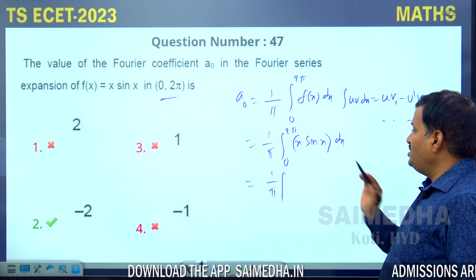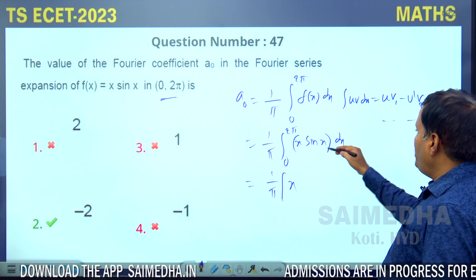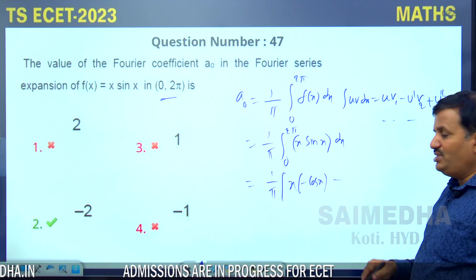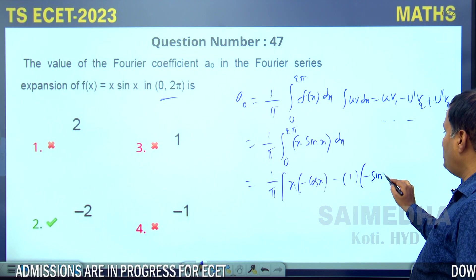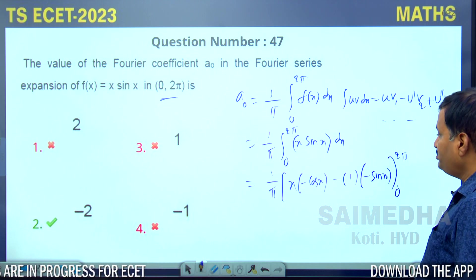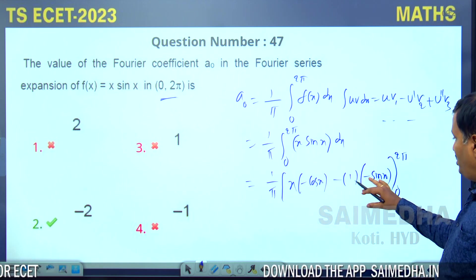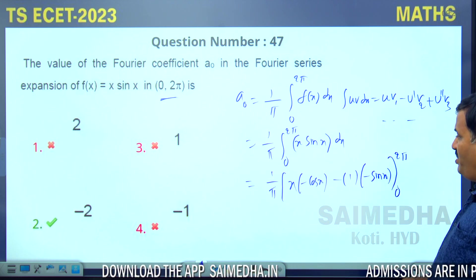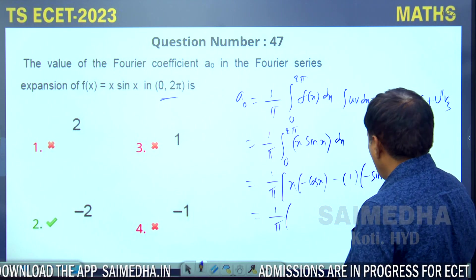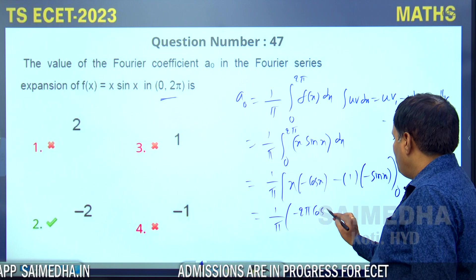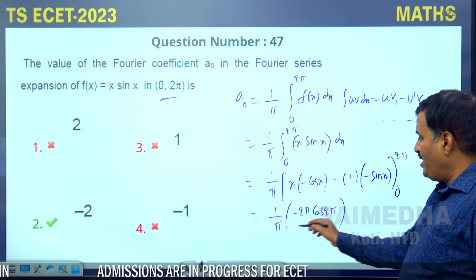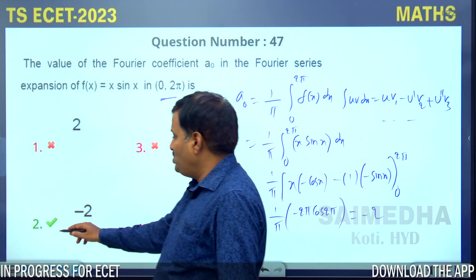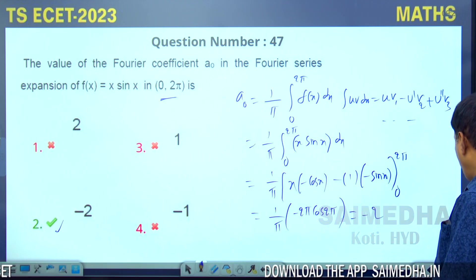By parts: x·(-cosx) - (1)·(-sinx), evaluated from 0 to 2π. The sin terms vanish at both limits. Substituting upper limit: -2π·cos2π = -2π. So a₀ = (1/π)·(-2π) = -2. The correct answer is -2.